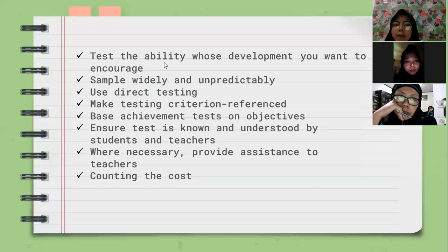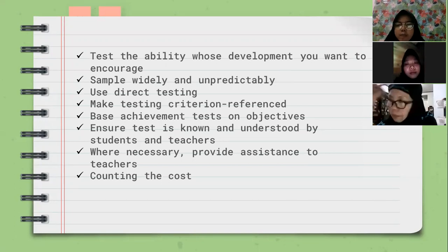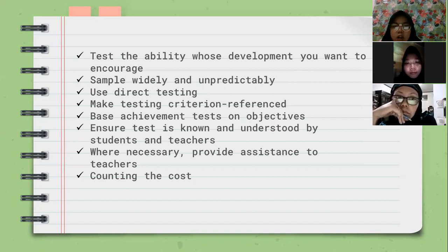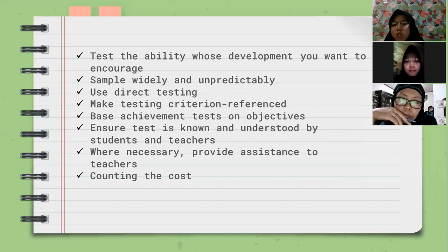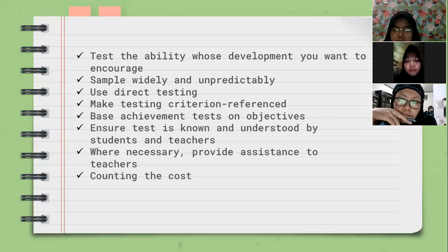The first point is to test the ability whose development you want to encourage. For example, if we want to test the student's oral ability, especially speaking, we should give a speaking test. However, Hughes also suggested that it is important for teachers not to focus on only one ability, but to relate or link other abilities as well. All skills should have sufficient coverage within the test, with each skill given sufficient weight in relation to other abilities.